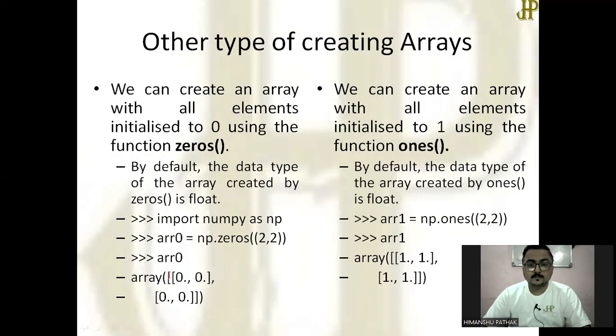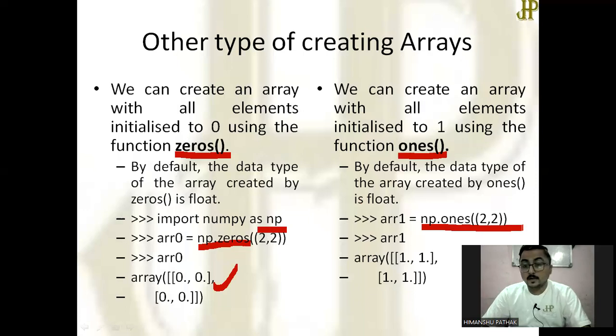Another type of creating arrays. First, we can create an array with all elements initialized to zero with the function zeros. You have to use np.zeros and supply the size: two rows, two columns. Here you can see that all the elements are filled automatically by default with zero. Another function is ones. With the help of ones, array can be created with by default value 1, like np.ones 2, 2. Two-dimensional array are created with two rows and two columns, and all are filled with value 1.